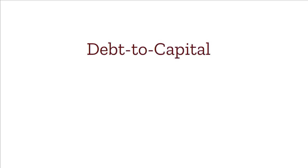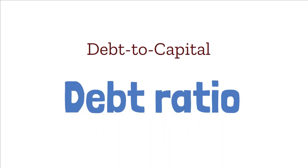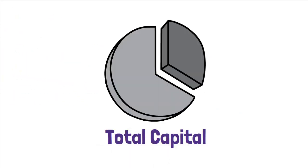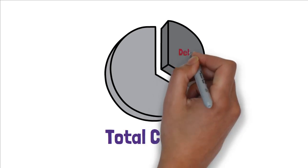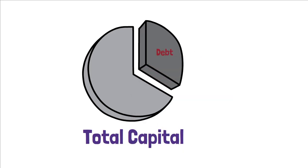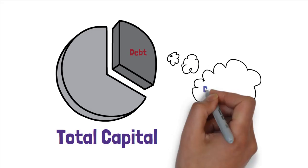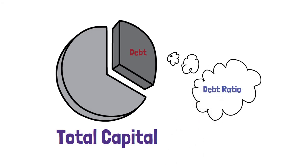Hi, in this video I am going to explain what the debt to capital ratio is with a numeric example. The ratio of total debt to total capital measures the percentage of the firm's capital provided by the debt holders. To keep things simple, this ratio can also be referred to as the company's debt ratio.